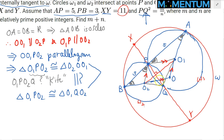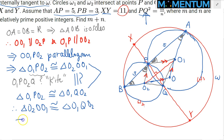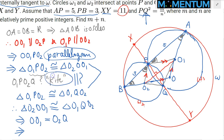So triangle O2O1 is congruent to triangle O1QO2, implying that OO1 equals O2Q. Due to symmetry — reflecting O2Q along the perpendicular bisector of O1O2 maps it onto O1O. As a result, we get a shape which is a trapezoid. So far I've mentioned a parallelogram, then a kite, and now a trapezoid.